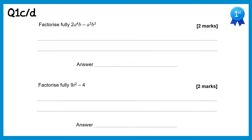For this question once again we need the highest common factor — that's going to be a cubed b. Then what would we times this by to get 2a to the power 4b? Well, we'd need to times it by 2a. And to get negative a cubed b cubed we'd need to times by negative b squared.